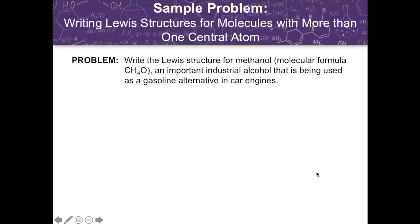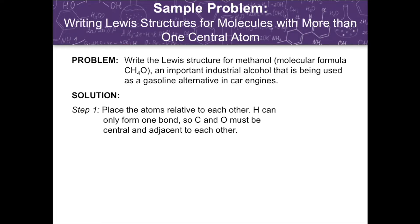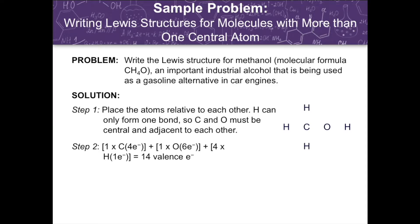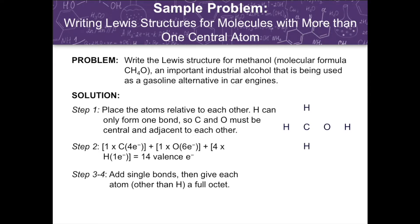For our next example, we have to write the Lewis structure for methanol. The molecular formula is CH₄O, an important industrial alcohol used as a gasoline alternative in car engines. We place the atoms relative to each other — hydrogen can only form one bond, so carbon and oxygen must be central and adjacent to each other. Carbon has 4 bonds and oxygen has 2. We arrange the hydrogen atoms accordingly and determine the sum of valence electrons, arriving at 14 valence electrons. After adding the single bonds and subtracting 2 electrons for each bond, we still have 4 electrons remaining.